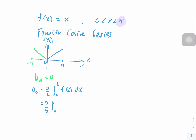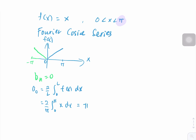Our a₀ equals 2 over L times the integral from 0 to L of f(x) dx, which becomes 2 over π times the integral from 0 to π of x dx. Integrating this gives us π. Similarly, aₙ equals 2 over L times the integral from 0 to L of f(x) cos(nπx/L) dx.